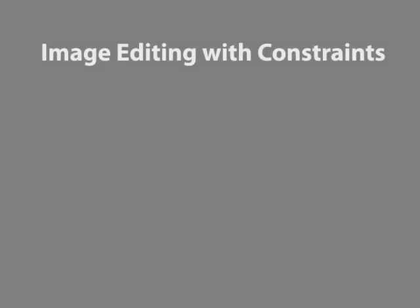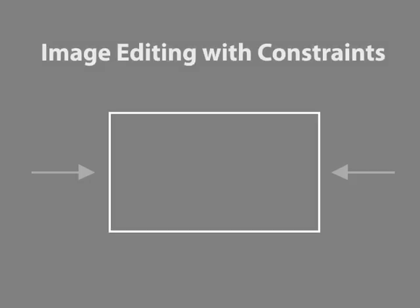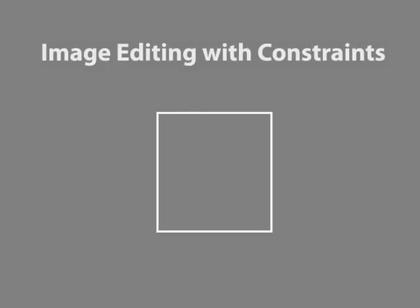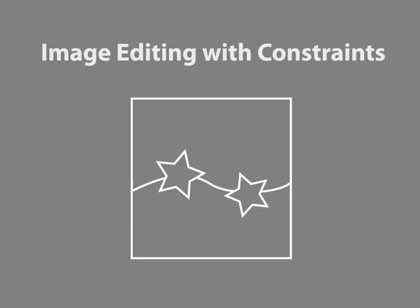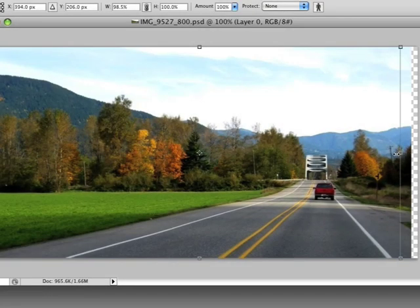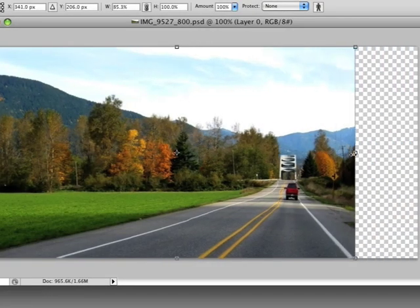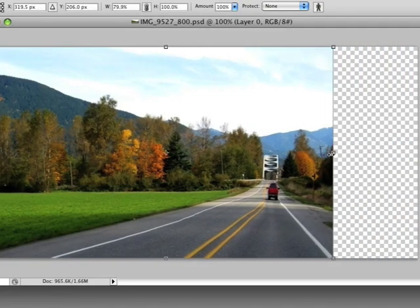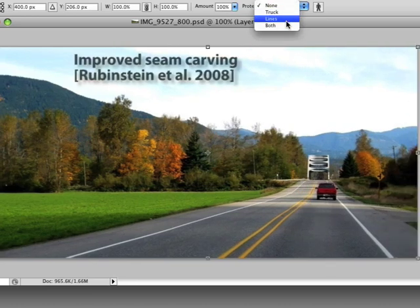Many recent image editing approaches take high-level image constraints as input, for example a change of aspect ratio, or in-painting a marked region. Some of these algorithms are interactive, like seam carving, but offer limited control over the results.